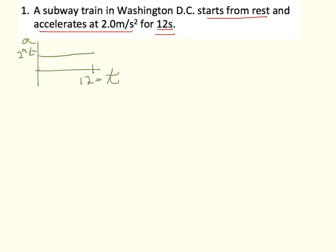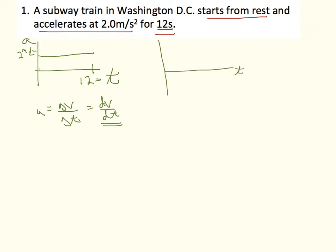The next thing I'd think about is what does this tell me about the velocity during that time. I already know it starts from rest, and I use the fact that acceleration equals the change in velocity over the change in time, or the derivative. Having a constant positive acceleration tells me I should have a constant positive slope on the velocity graph.